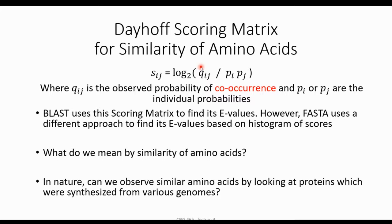Qij is related to the observed relative frequency of two different amino acids, and we talk about the similarity between them. If we focus on specifically two amino acids, we can find the relative frequency. Relative frequency means how many of them we observe over all observations for all amino acids. Pi and Pj are related to just one single amino acid.